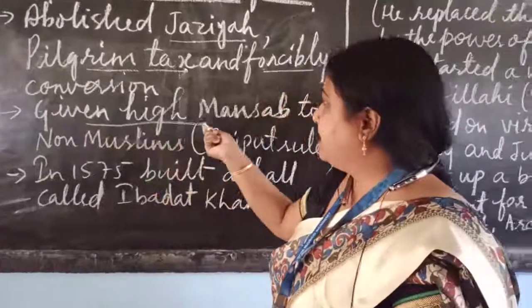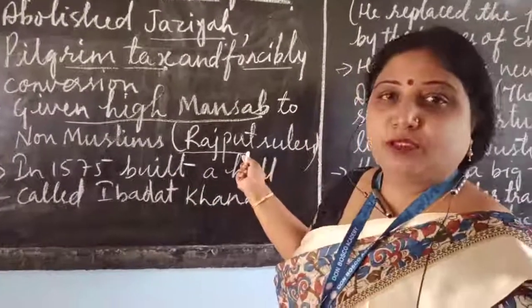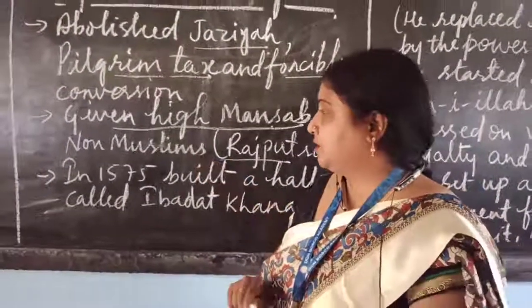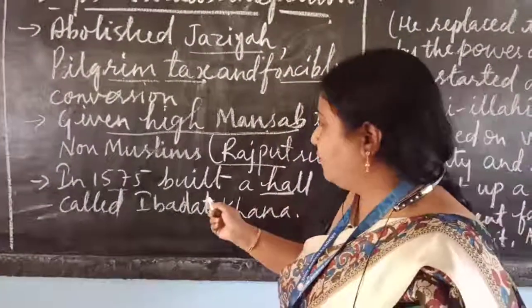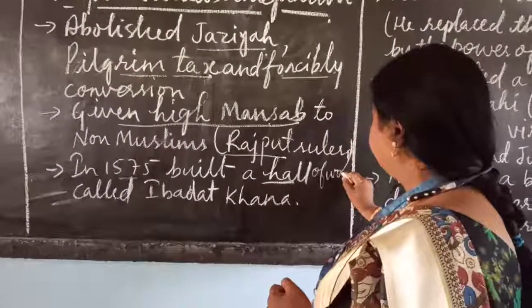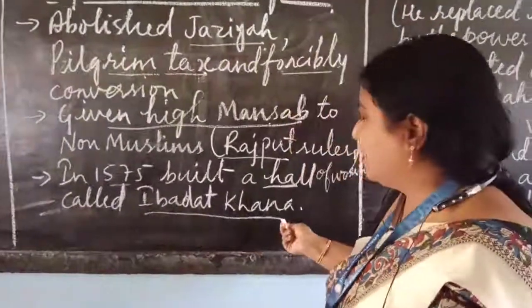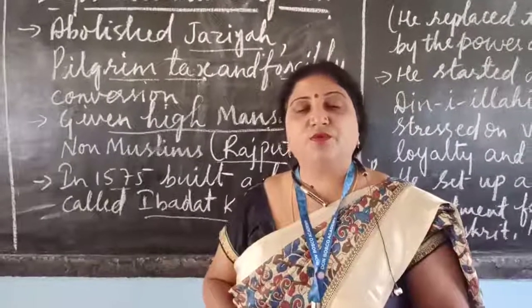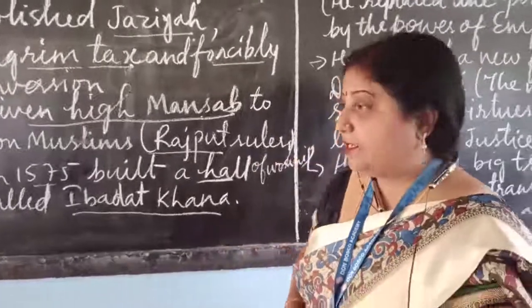He gave high mansabs to non-Muslims, especially to the Rajputs. In 1575, he built a hall of worship known as the Ibadat Khana, where he held religious discussions with gurus of different religions.